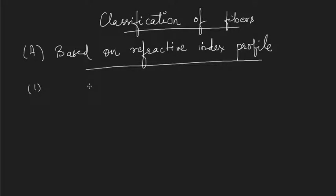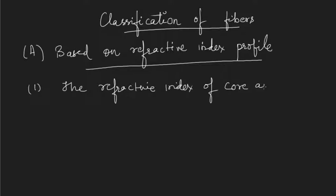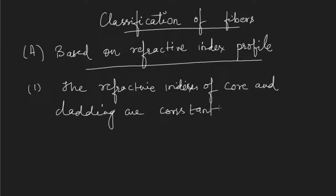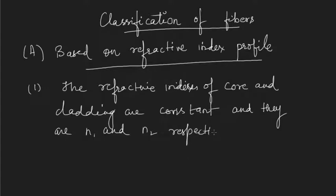I am not giving you the name yet — we'll try to guess the name by understanding the property. The first kind of fiber has a refractive index of core and cladding that are constant, n1 and n2 respectively. From basic principles we already know that in order to undergo total internal reflection, the refractive index of the core should be more than that of the cladding.